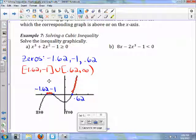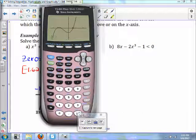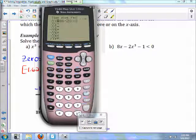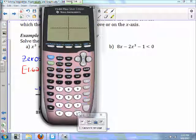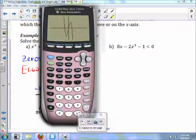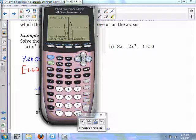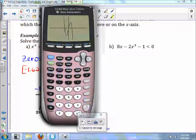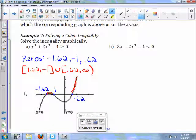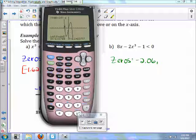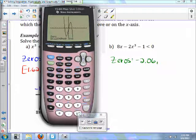For part B, I'll just put in my calculator as is. I'll have 8x minus 2x to the third minus 1. You can find those zeros pretty easily. Second trace. My first zero is at negative 2.06. Second zero is at 0.13.